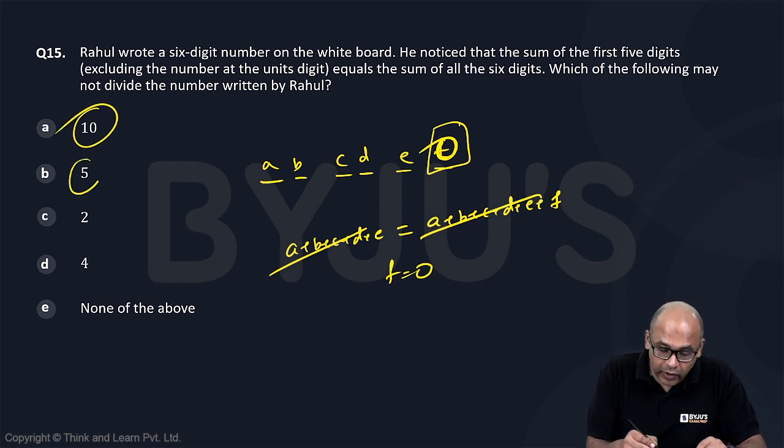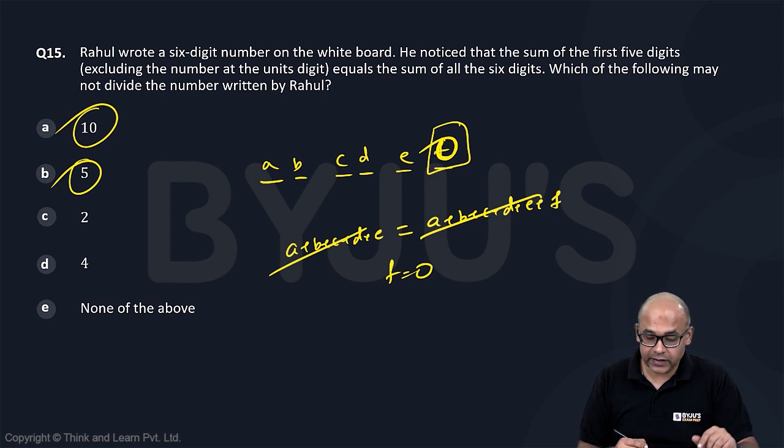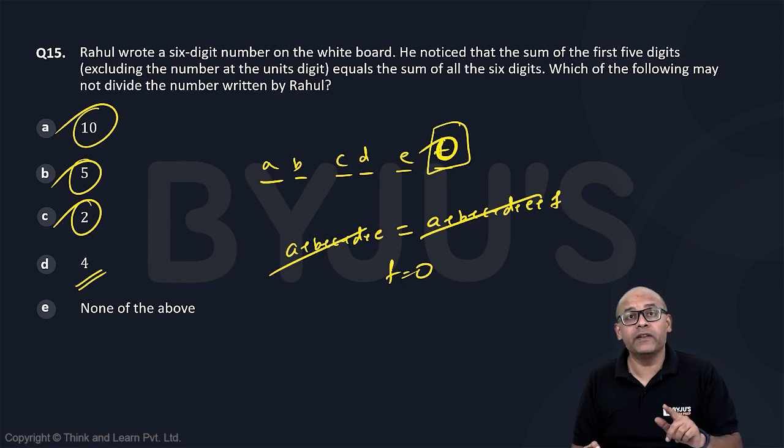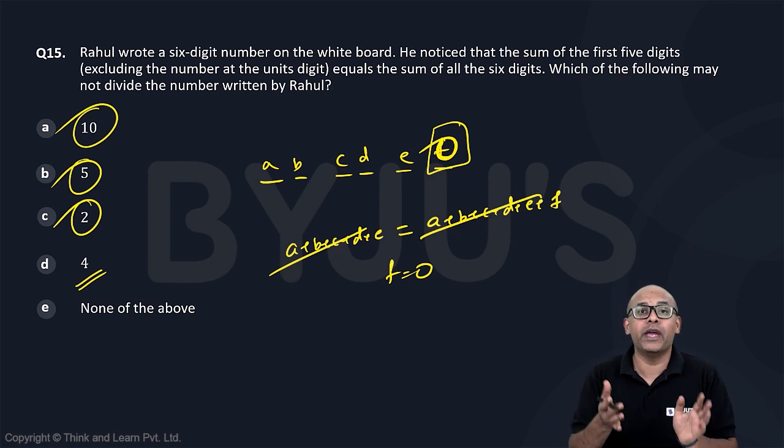A number ending with zero will always be divisible by 5. That is not your answer. A number ending with zero will always be divisible by 2. However, it may not be divisible by 4 because you can see 30 is not divisible by 4. So any number ending with zero may or may not be divisible by 4. It depends on what is the tens place.